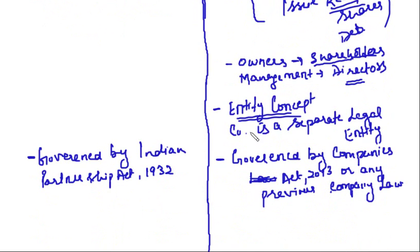Company is a separate legal entity. Accounting for the company is done separately from accounting for the directors running it. Partnership is governed by the Indian Partnership Act 1932, and companies are governed by the Companies Act 2013, replacing the previous Companies Act 1956.